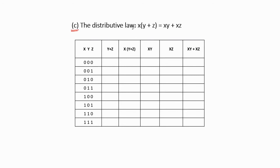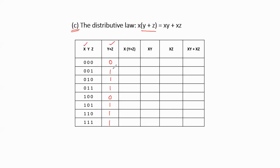The next identity is the second distributive law: x(y+z) = xy + xz. To verify this, we again take the truth table, write the input variables, and eight combinations of binary. In the second column we find y + z from the LHS part. If both inputs are 0 the output is 0; otherwise 1. Then in the third column we AND x with (y+z), focusing on x and y+z columns.